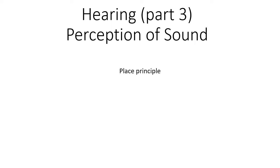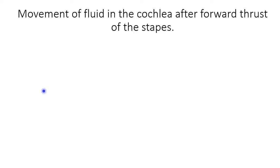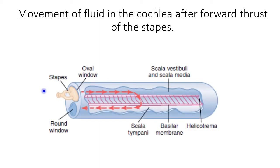We'll discuss the place principle and the volley theory. To better understand the perception of sound, we should first know how the fluid inside the cochlea is moving and, according to that, how the basilar membrane is moving upwards and downwards.